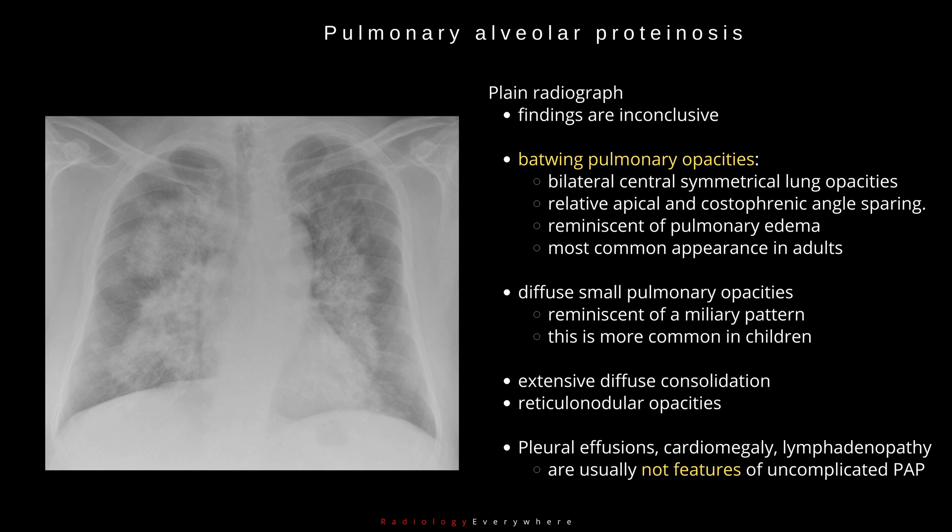This second pattern is more common in children. Other findings include extensive diffuse consolidation and reticulonodular opacities. However, pleural effusions, cardiomegaly, and lymphadenopathy are usually not features of uncomplicated PAP.